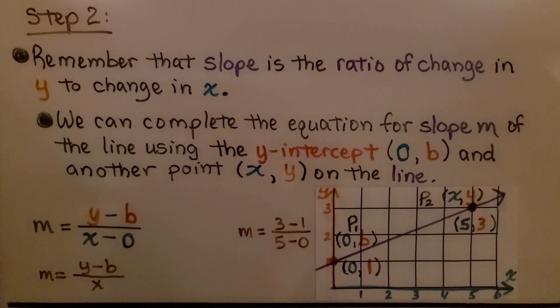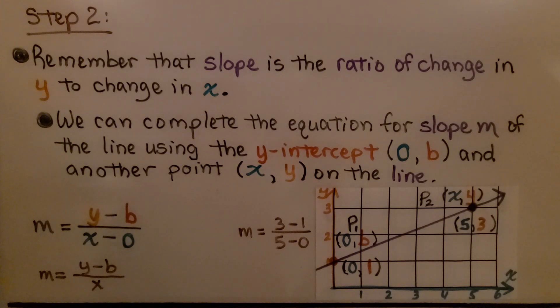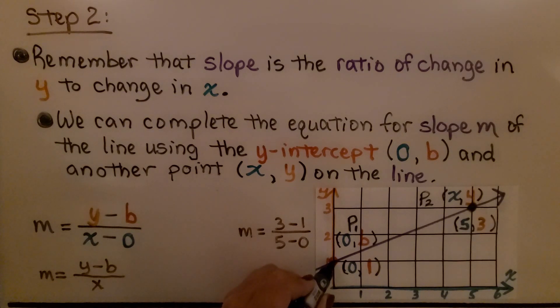Here's step two. We're going to remember that the slope is the ratio of change in y to the change in x. We can complete the equation for slope m of the line using the y-intercept (0,b) and another point (x,y). We have m equals y minus b over x minus 0.